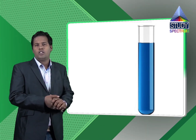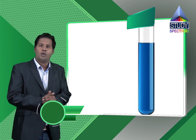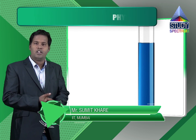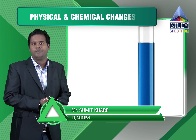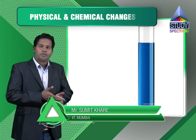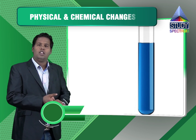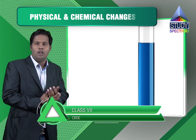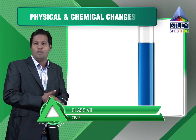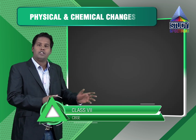Now I hope you understand what is water of crystallization, as we have seen five water molecules associated with crystalline dissolved copper sulfate. Moving further in this experiment, you have already dissolved copper sulfate into water to form copper sulfate solution, which is blue in colour in the test tube.